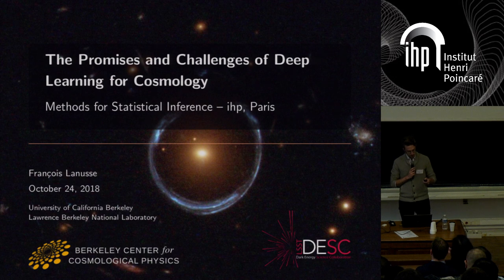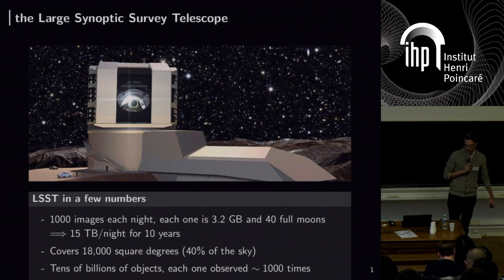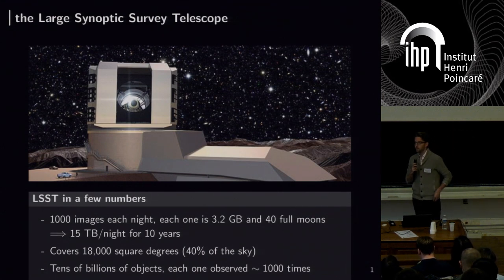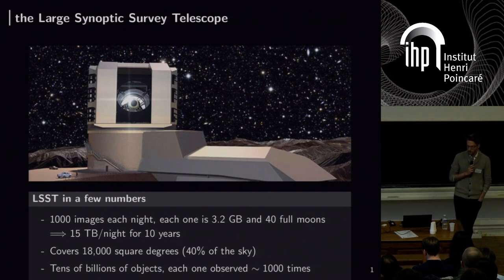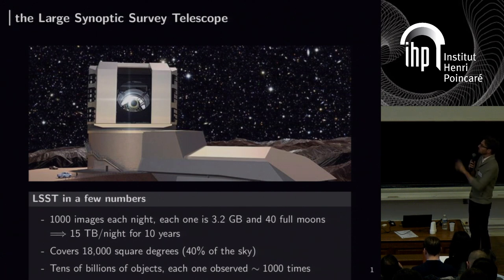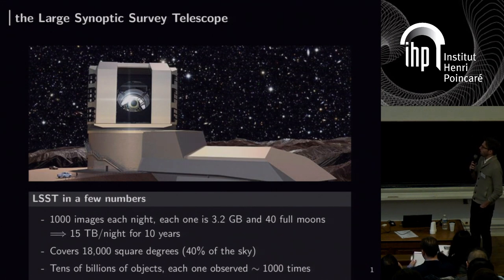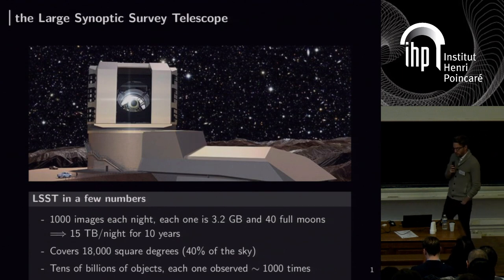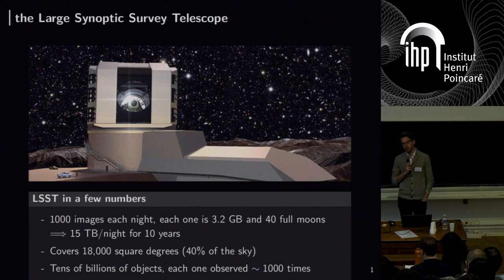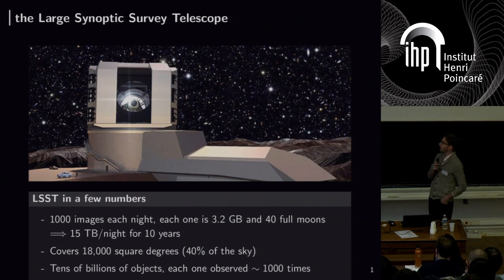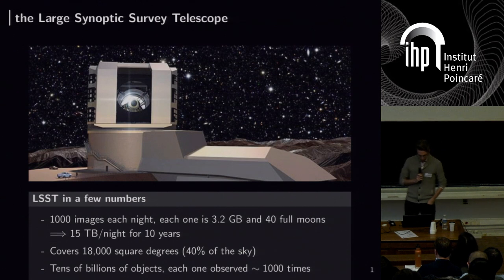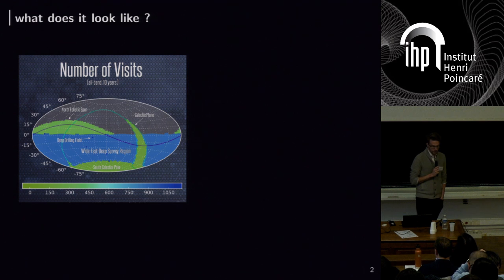Before diving into the machine learning aspects, I want to put things into perspective. Most of us here are working either in a survey or towards a next-generation survey. My specific survey is the LSST — I'm part of the Dark Energy Science Collaboration. The LSST is essentially a giant robot telescope that will observe the full sky once every three days. Every night you get something like 15 terabytes of image-level data that needs to be processed at this huge rate, over a period of 10 years to do our cosmology.